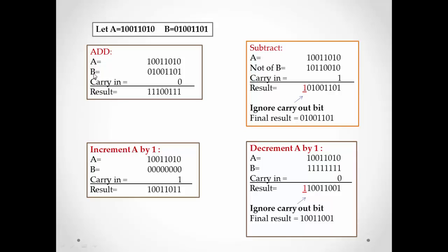We see the operations in the laboratory. When we want to add A with B, A plus B equals the result, and carry-in should be zero. When we want to increment A by one, B should be zero and carry-in should be one; after addition we get the result which increases A by one. In case of subtraction, we use A and the two's complement of B — first NOT of B, then carry-in one. Adding these three gives the final result.